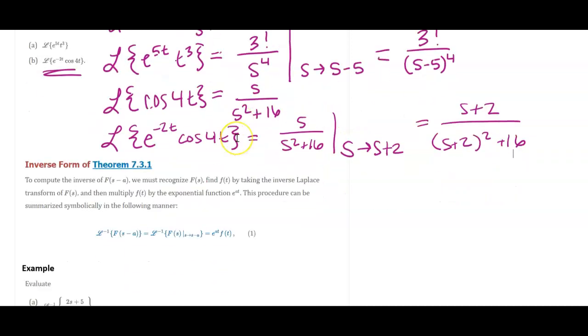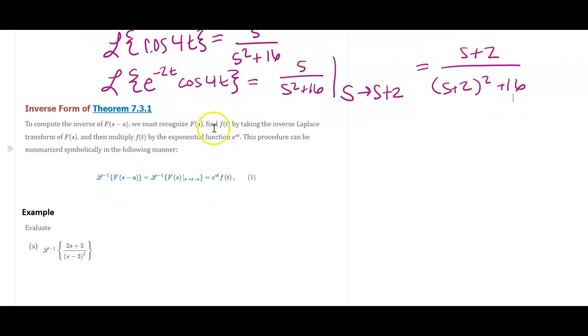Now we also need to be able to do some inverse form as well. So if we notice an s minus a inside of a function that we're looking at, then you can just say, well, what if I notice f of s, and then that's going to be as s goes to s minus a. And so I can kind of backtrack it that way.